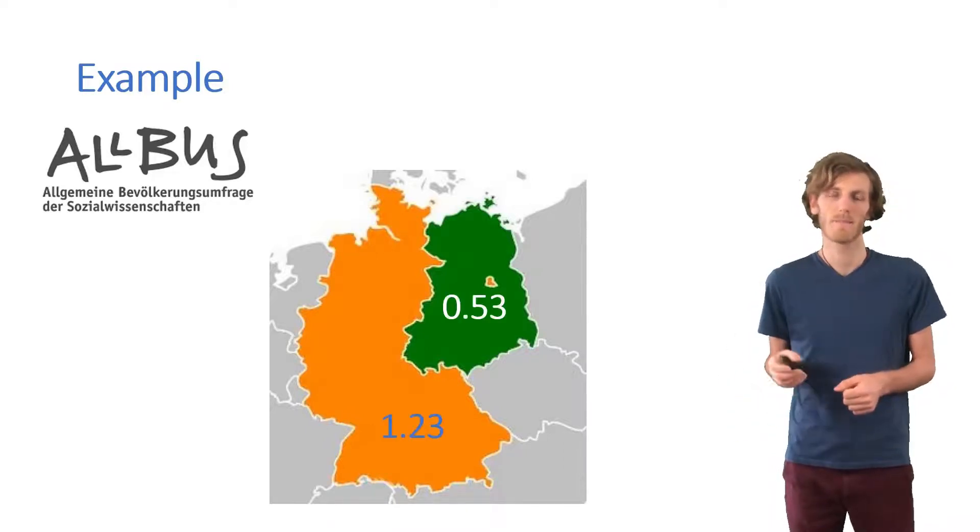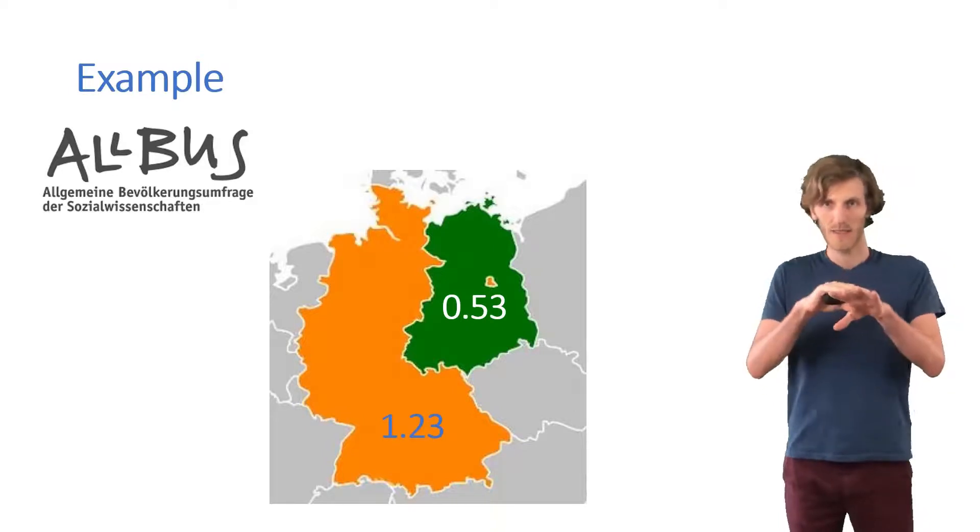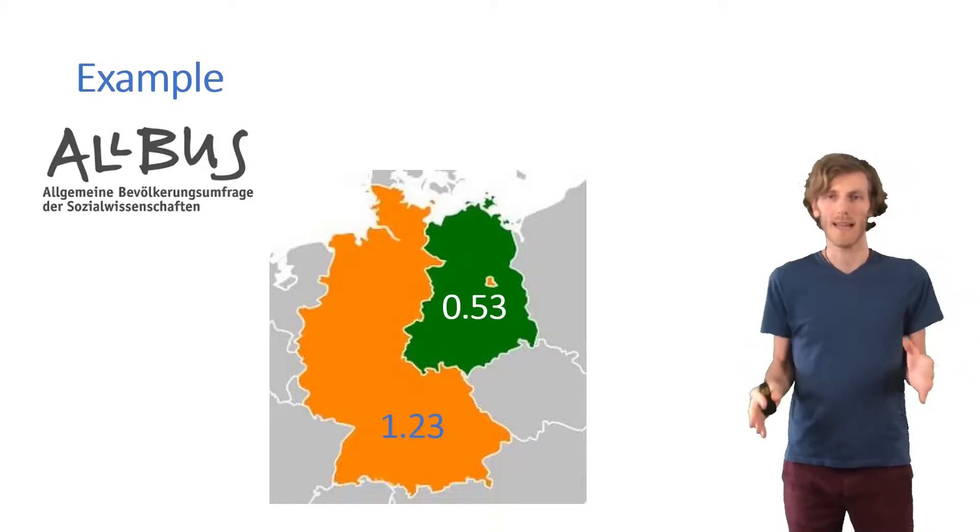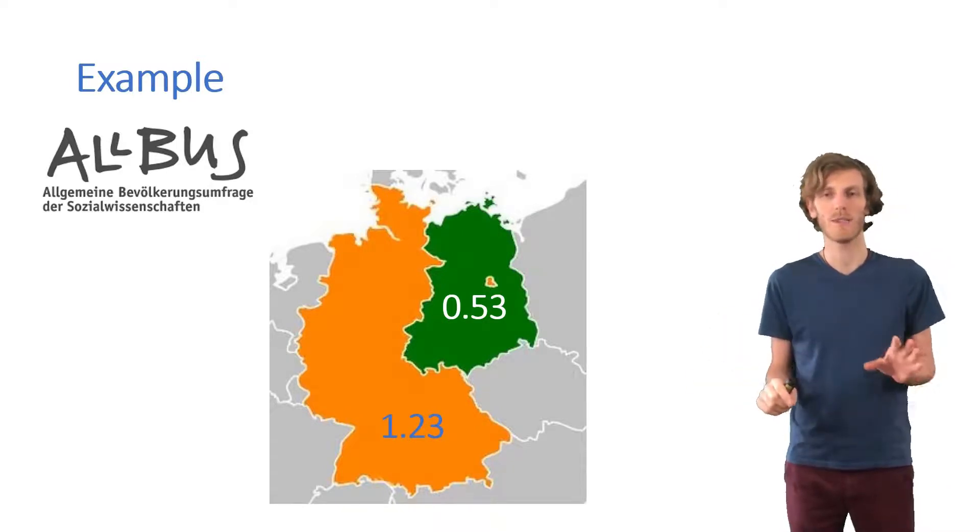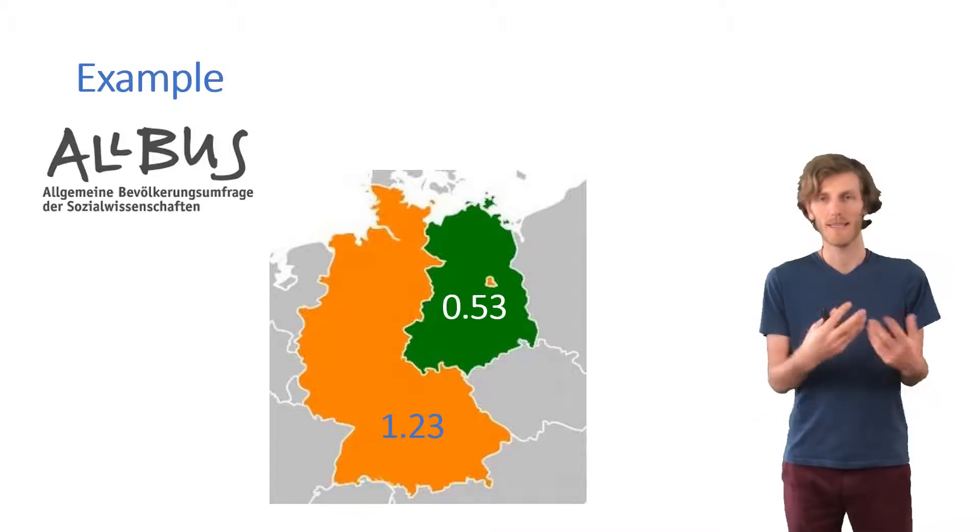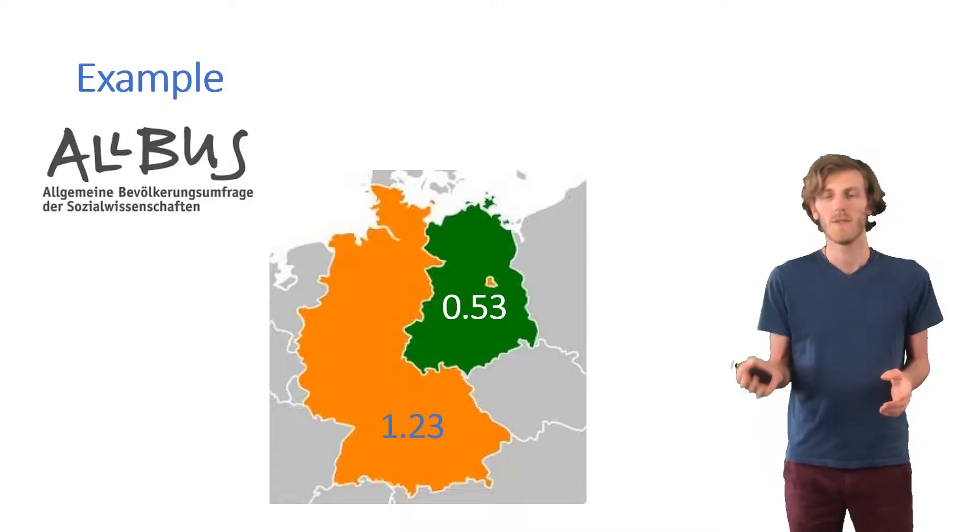But then afterwards, they say, for analysis of the entire German population, only give half as much weight to people in the East as you do to people in the West, roughly. So they provide these very specific weights here, 0.53 for the East, 1.23 for the West.